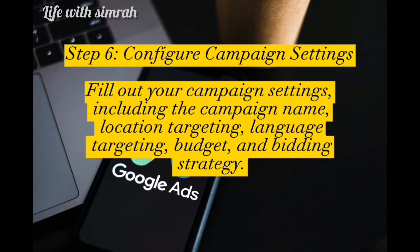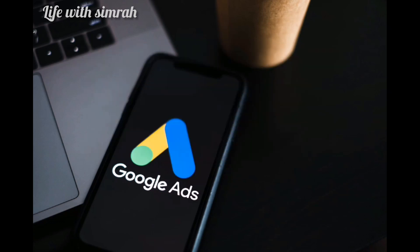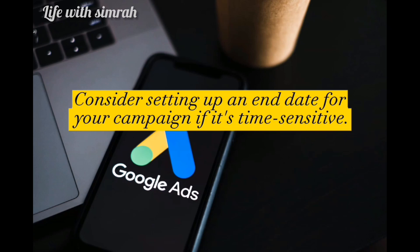Step 6: Configure campaign settings. Fill out your campaign settings, including the campaign name, location targeting, language targeting, budget, and bidding strategy. Consider setting up an end date for your campaign if it's time sensitive.